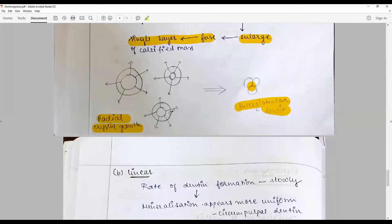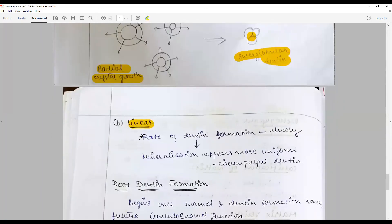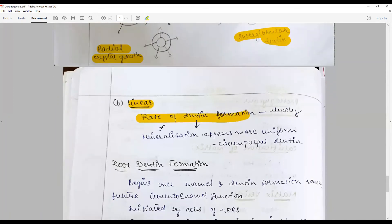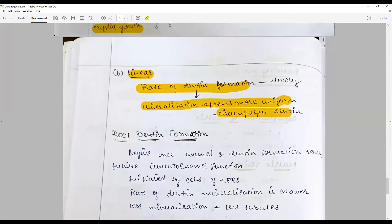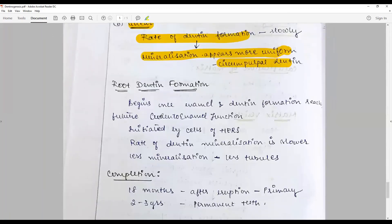The less common pattern is linear or straight line mineralization. The rate of dentin formation is very slow, and linear formation is even slower. Mineralization appears to be more uniform in the circumpulpal dentin than in the mantle dentin.